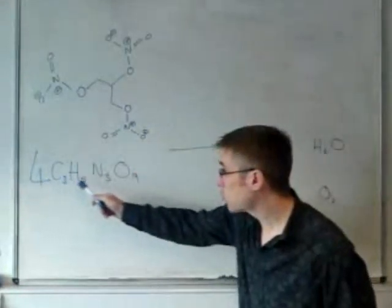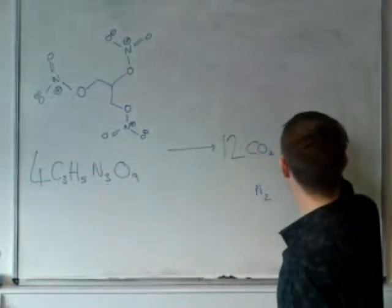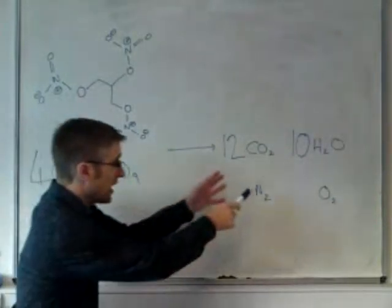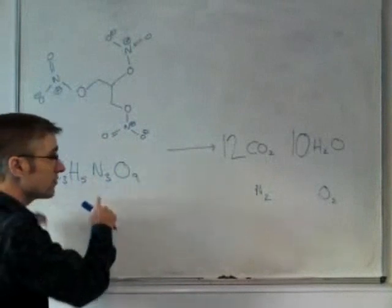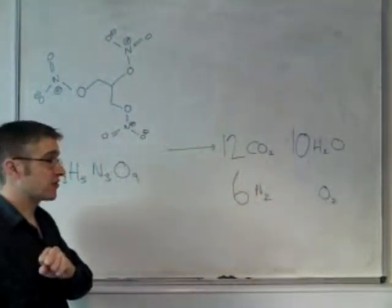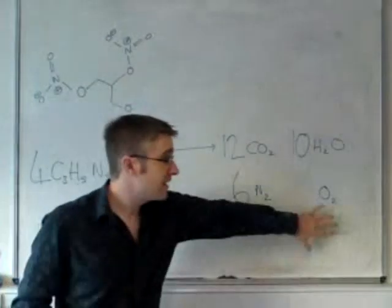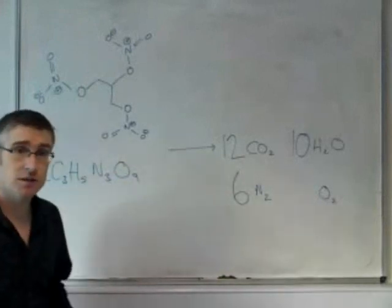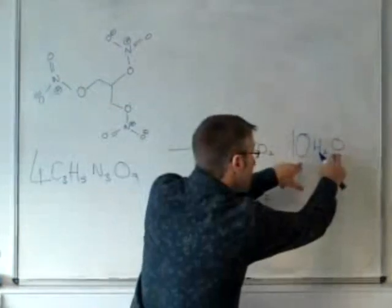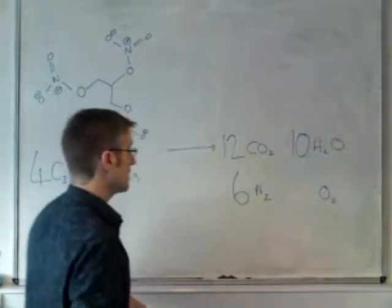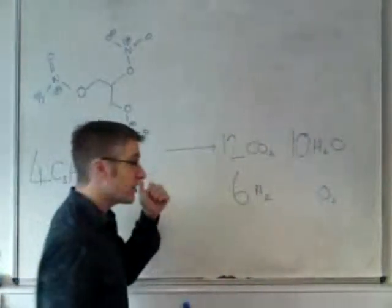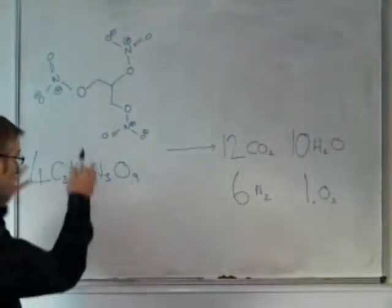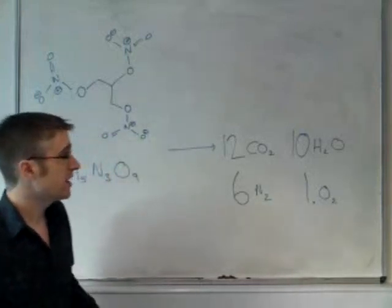All of the nitrogen ends up as nitrogen gas, so 12 nitrogens must give six nitrogen gas. The final thing to balance is the oxygen. On this side we have 36 oxygens, here we have 24, 34 oxygens, so 36 minus 34, so there must be one molecule of oxygen gas to balance this equation.